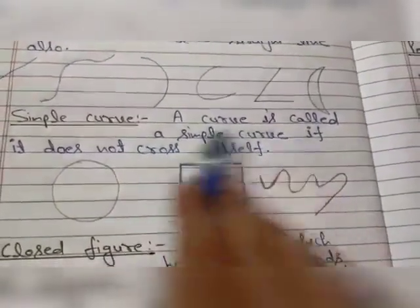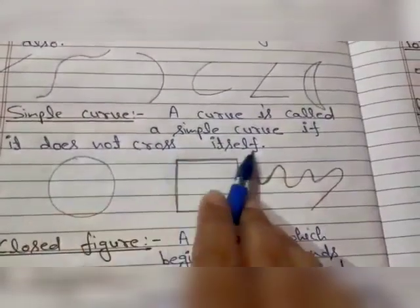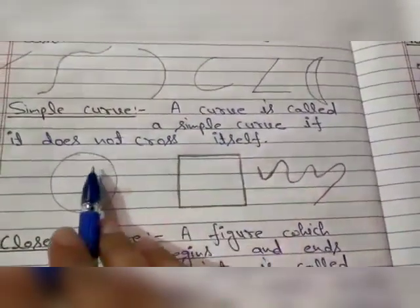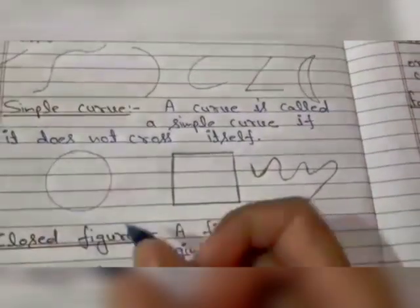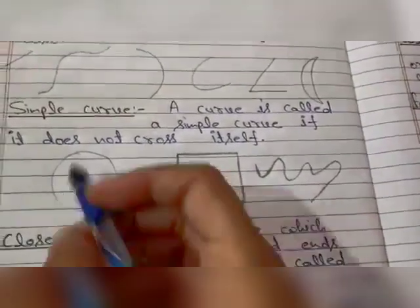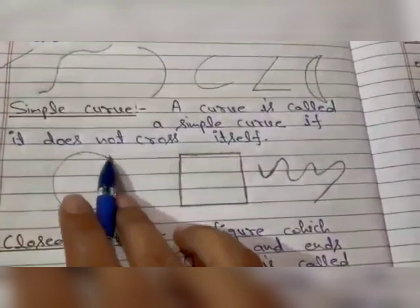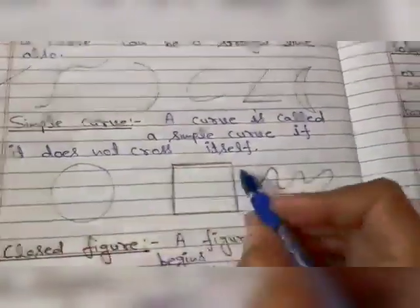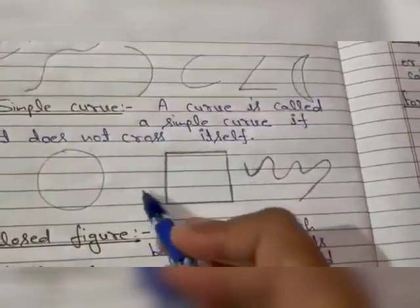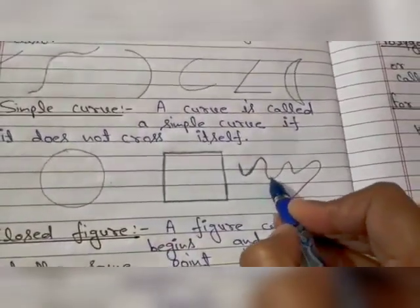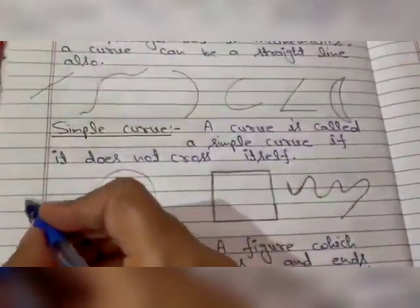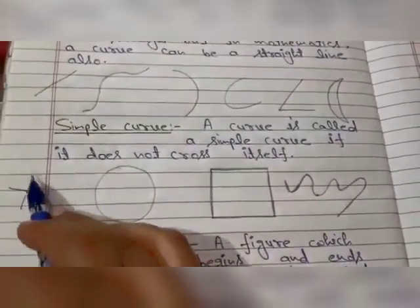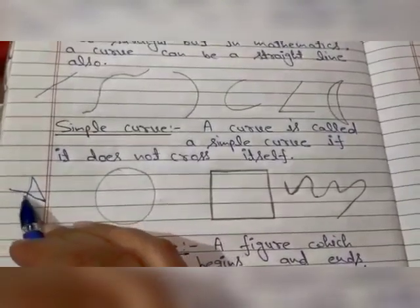A curve is called a simple curve if it does not cross itself. Aisa curve jis mein koi bhi side aapas mein cross nahin karti. So this is a simple curve, this is also a simple curve, and this one is also a simple curve. If we draw a figure like this, this is not a simple curve because these intersect at a point and they are crossing each other.